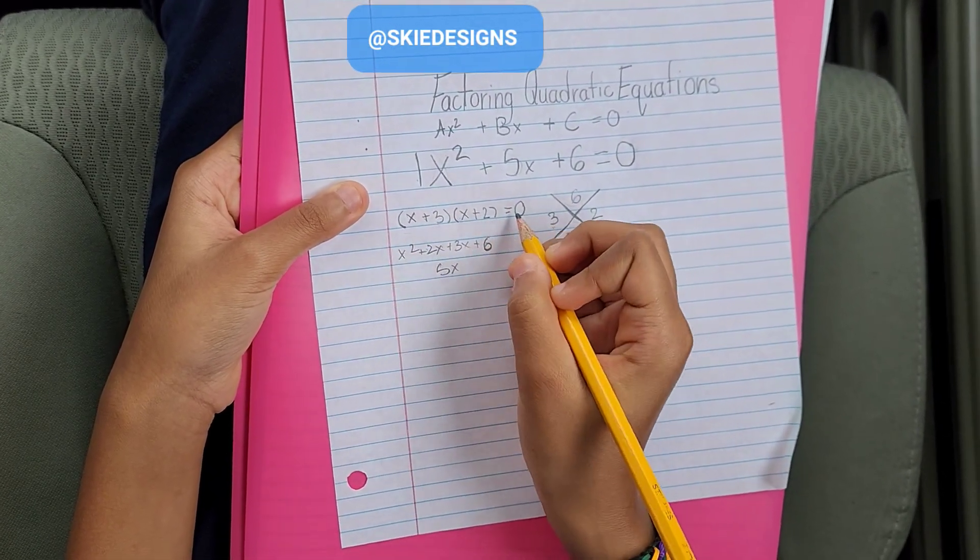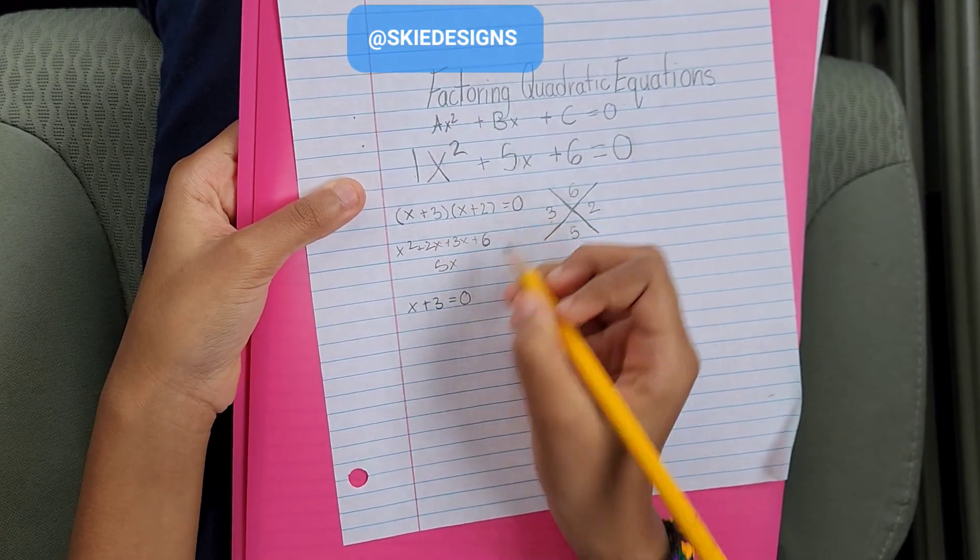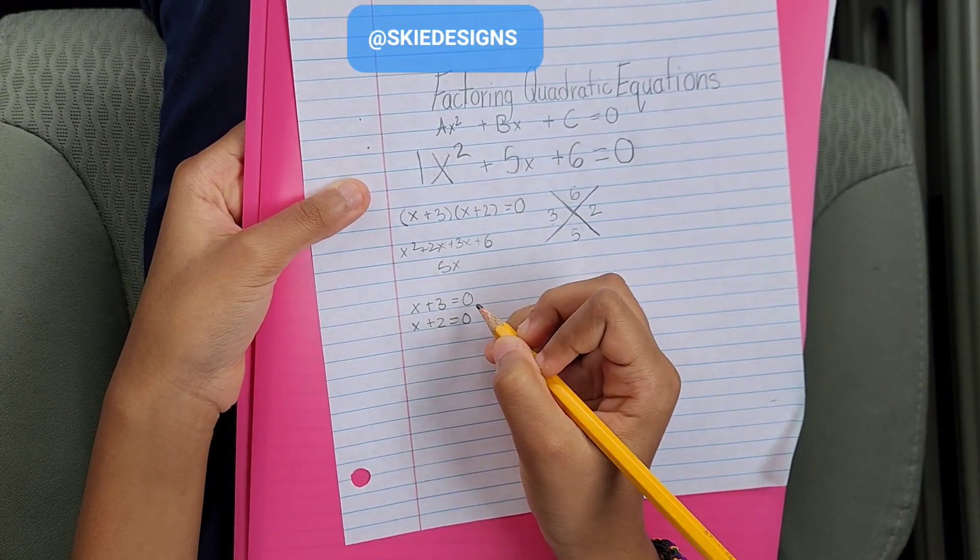We have x plus 3 is equal to 0, so that's what we're going to write here. And x plus 2 is equal to 0. Now, this doesn't tell us what x is equal to yet.